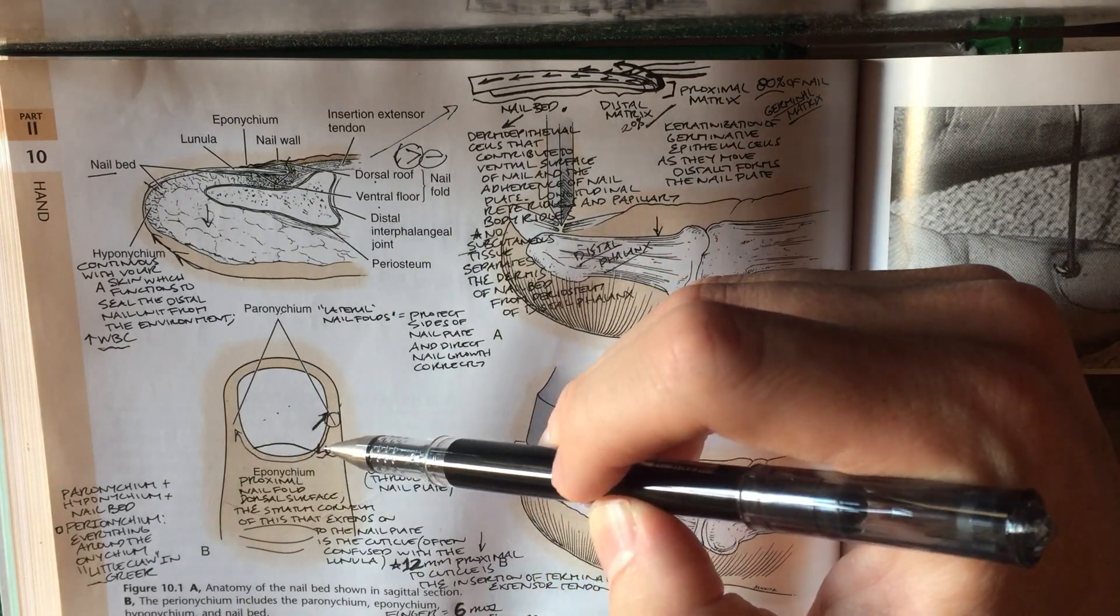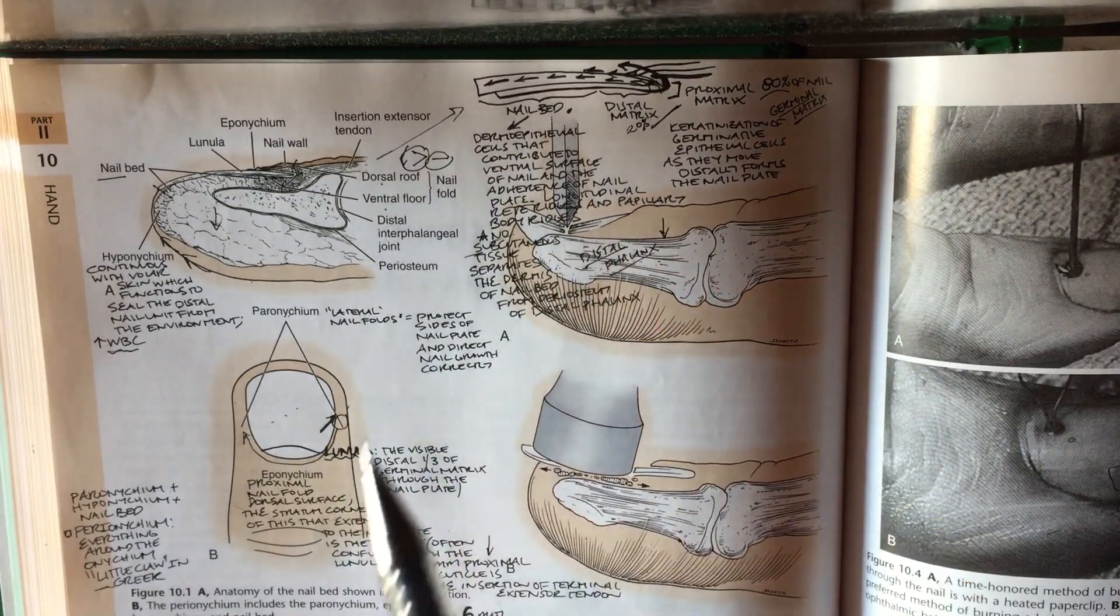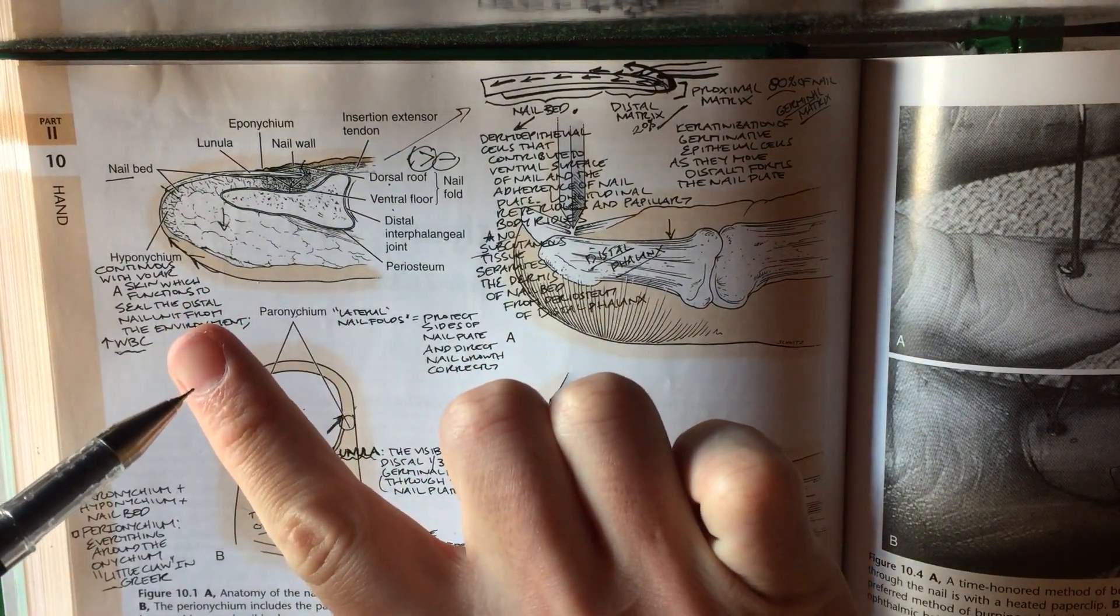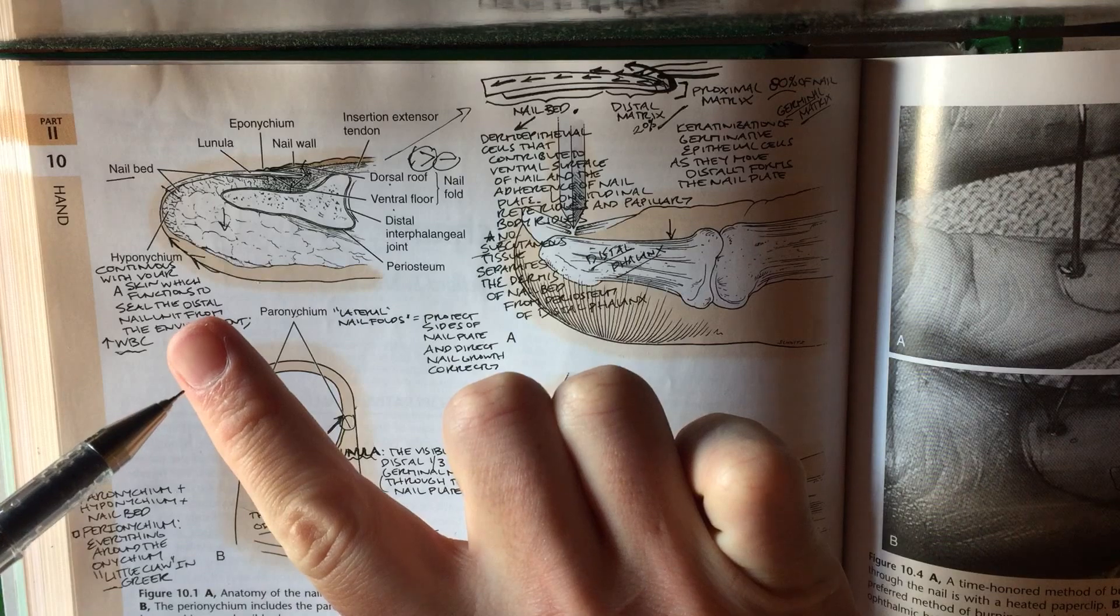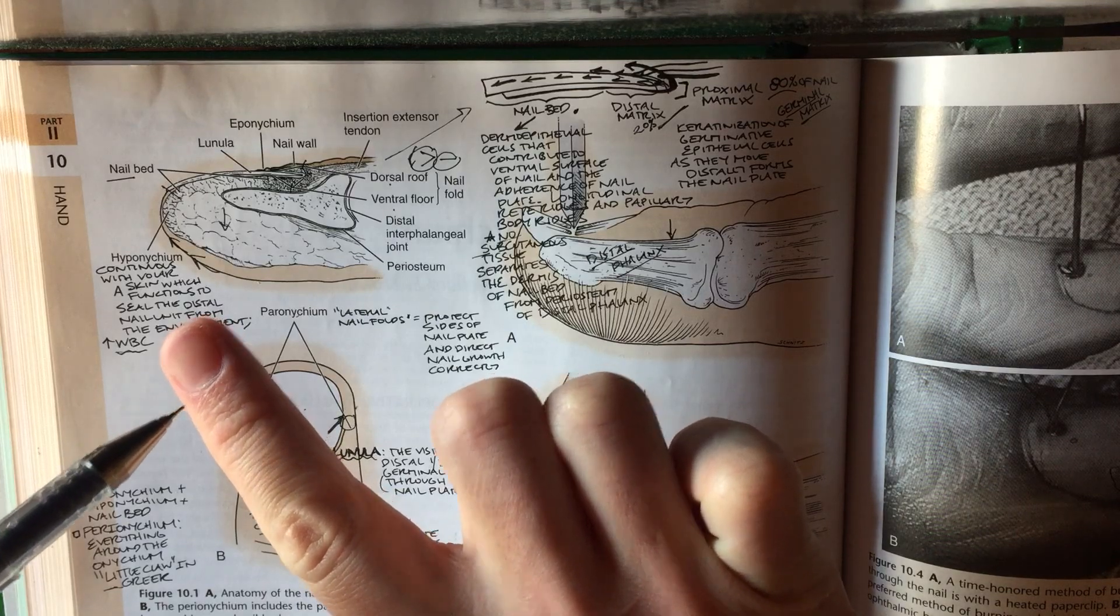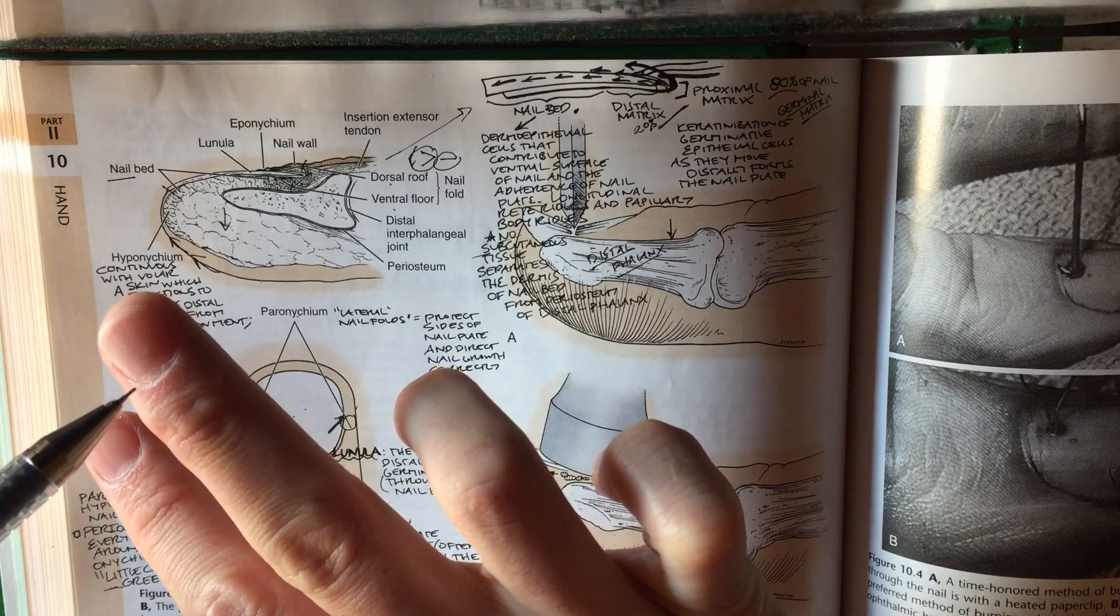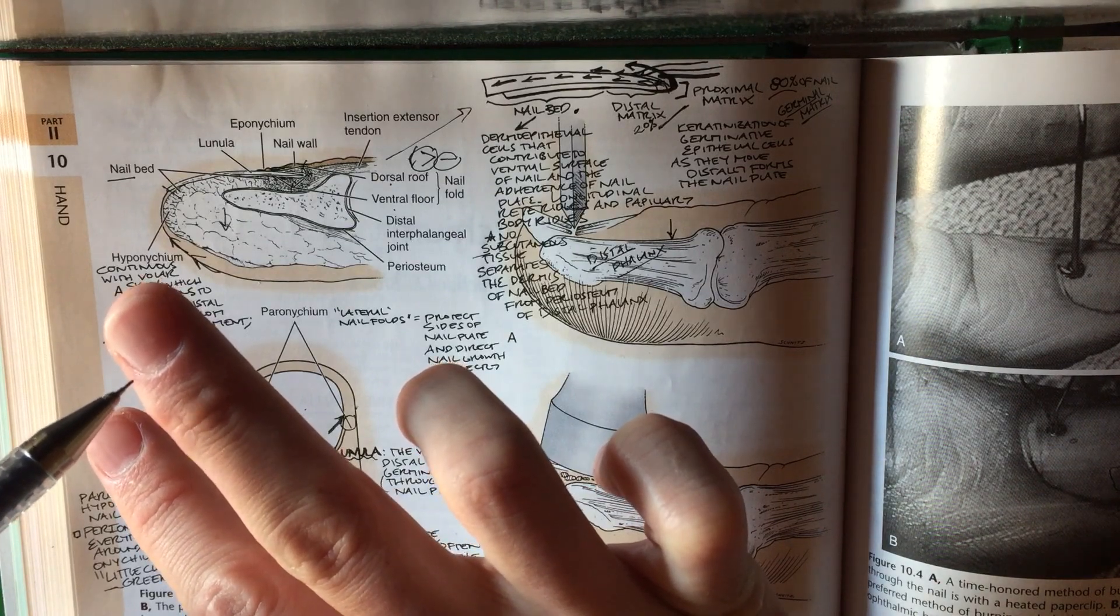There's a big difference between the cuticle and the lunula. The lunula is this moon-shaped structure that you can see underneath the nail plate. That's actually the distal one-third of the germinal matrix. The cuticle is actually this thin layer of stratum corneum that's an extension of the dorsal eponichial fold.